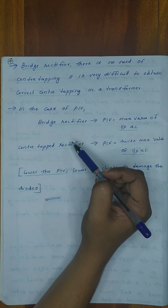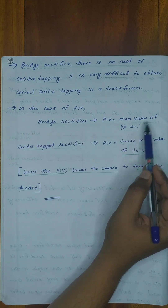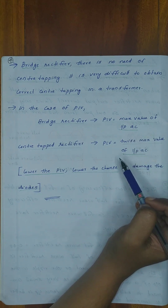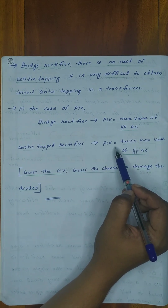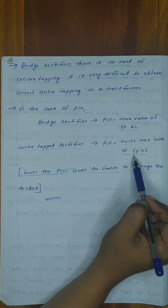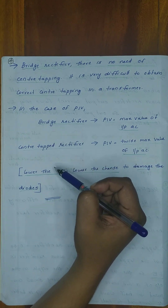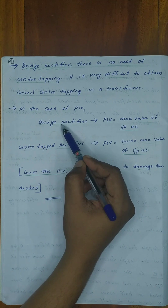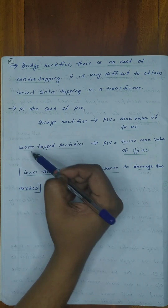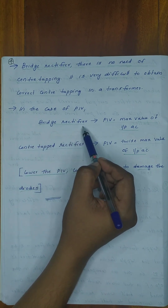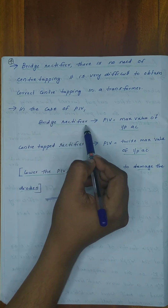In the case of a bridge rectifier, the peak inverse voltage is equal to the maximum value of the input AC. In a center tap rectifier, the peak inverse voltage is twice the maximum value of the input AC. This is why the bridge rectifier has the advantage of lower peak inverse voltage, and there is no need for center tapping.